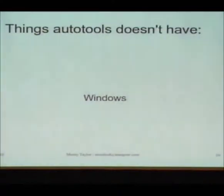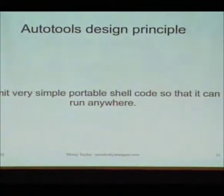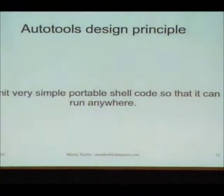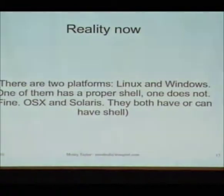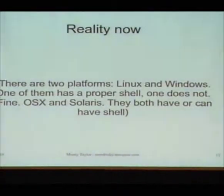The one major feature that auto-tools doesn't have is that it doesn't work on Windows. Auto-tools makes, as one of its basic design principles, that it's going to run some stuff on a maintainer's machine and create simple portable shell script code so that it can run anywhere. The problem is that these days there are really two effective platforms: Linux and Windows. One of those has a proper POSIX shell system; one doesn't. The days of HPUX, AIX, IRIX — they're still there sort of, but they're not really the main targets of most ongoing development.